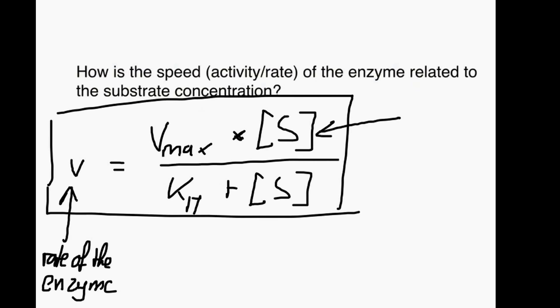This S in square brackets means the substrate concentration. So we have this twice in the equation.